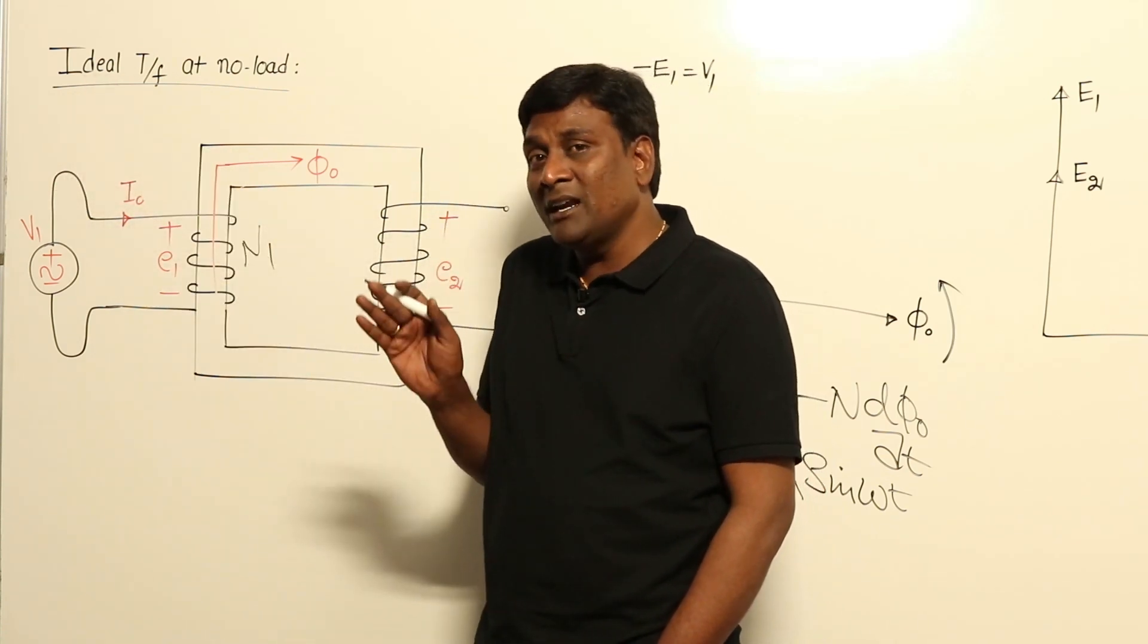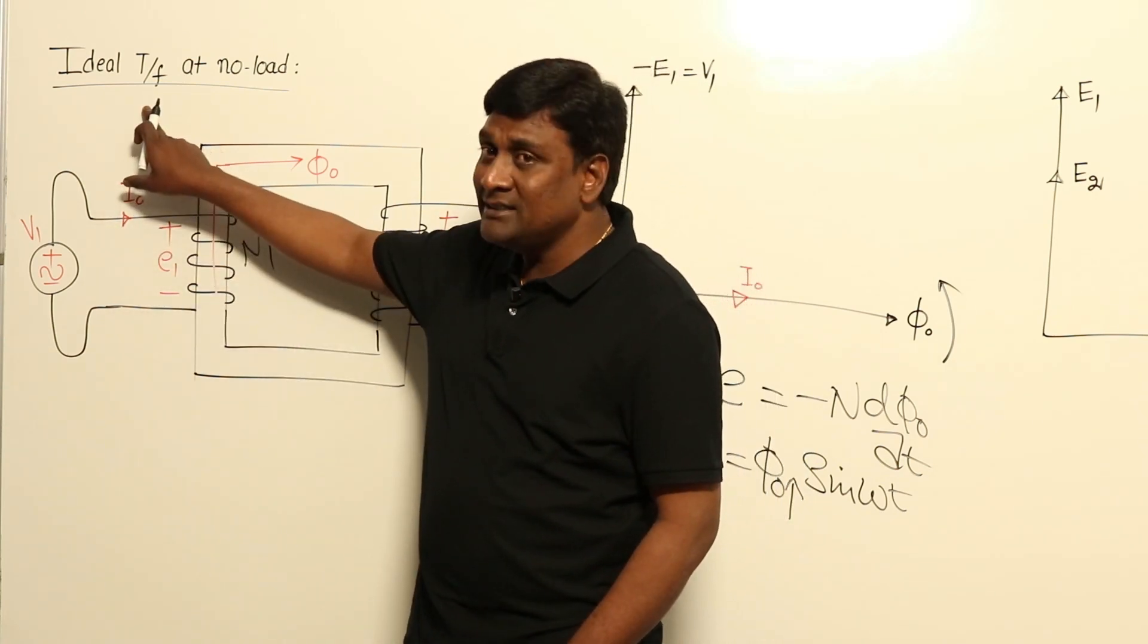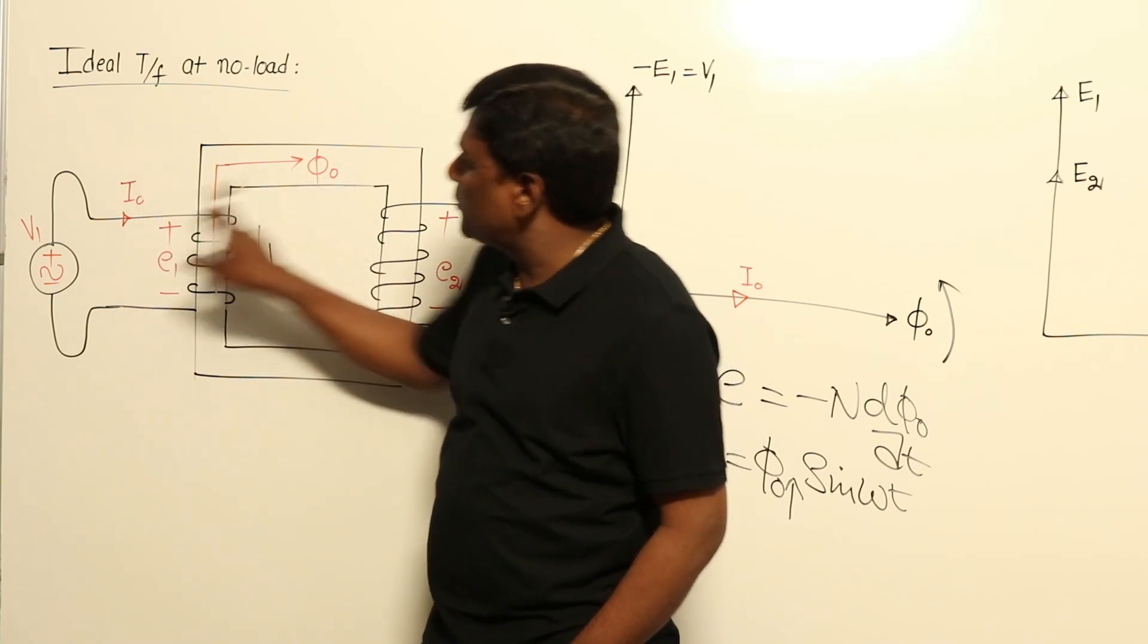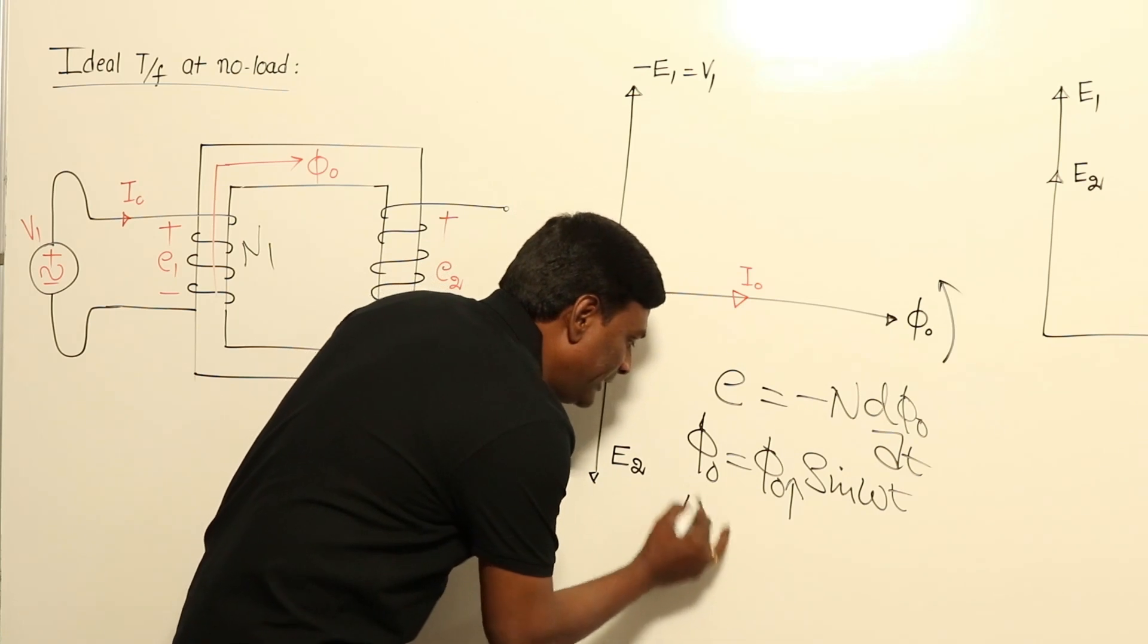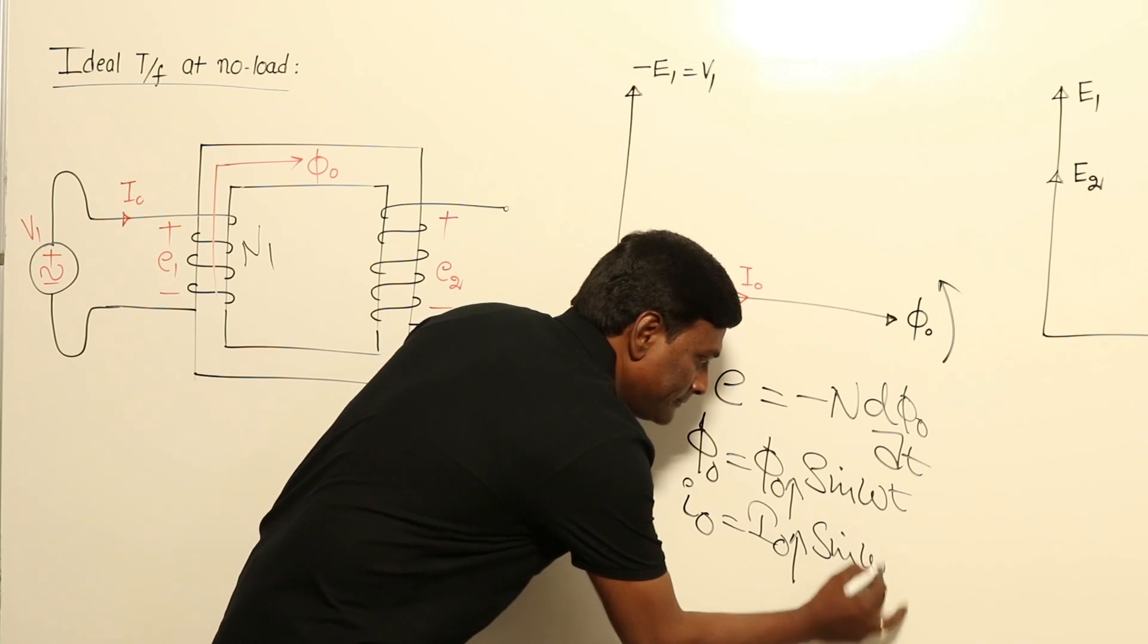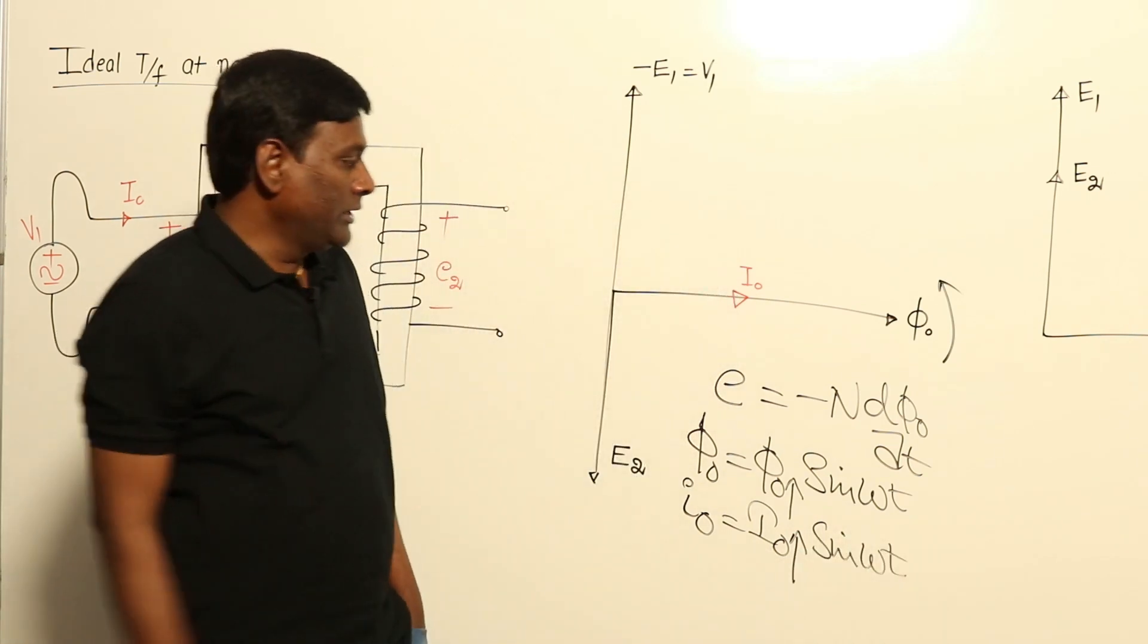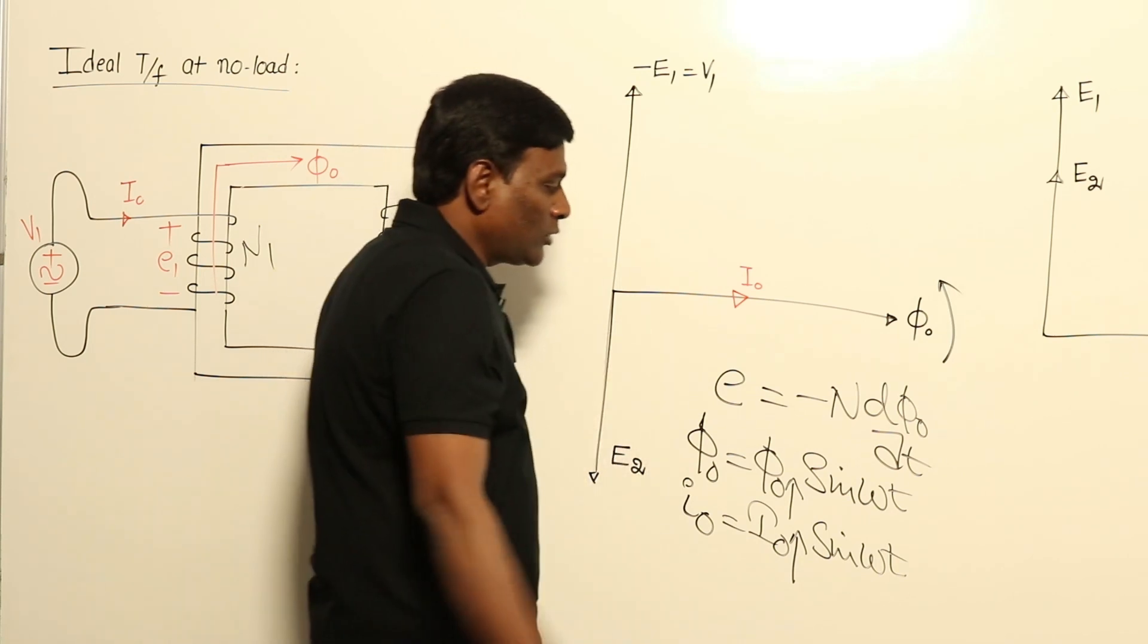Non-linearity will be analyzed at a later point of time but not now. So the moment ideal machine is linear, I is directly proportional to Φ. So my current is going to be I0 equal to I0 max sin ωt. Now if I keep this particular equation in this, you are going to get induced voltage in primary.